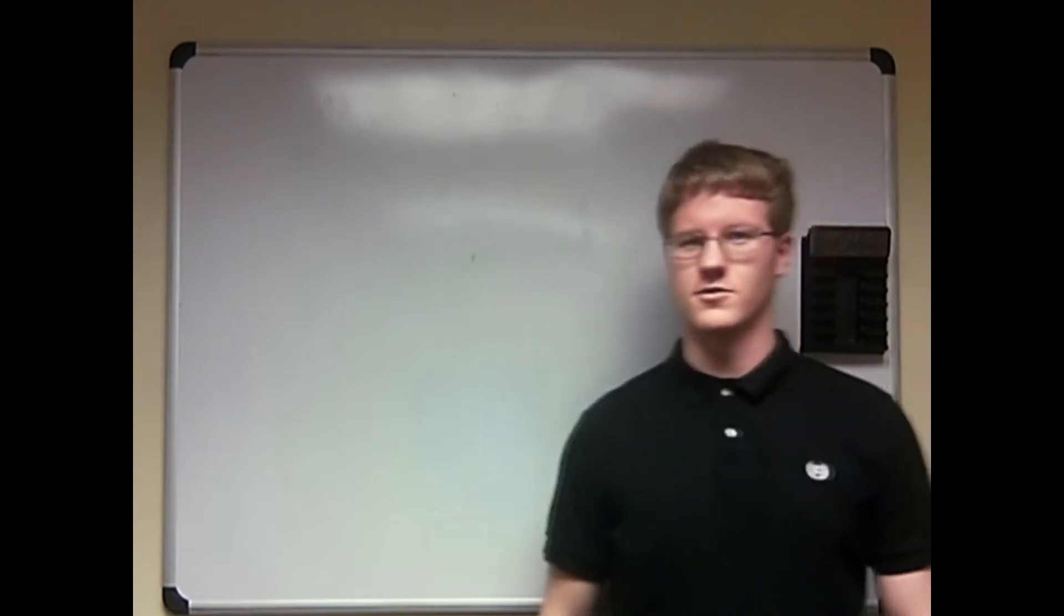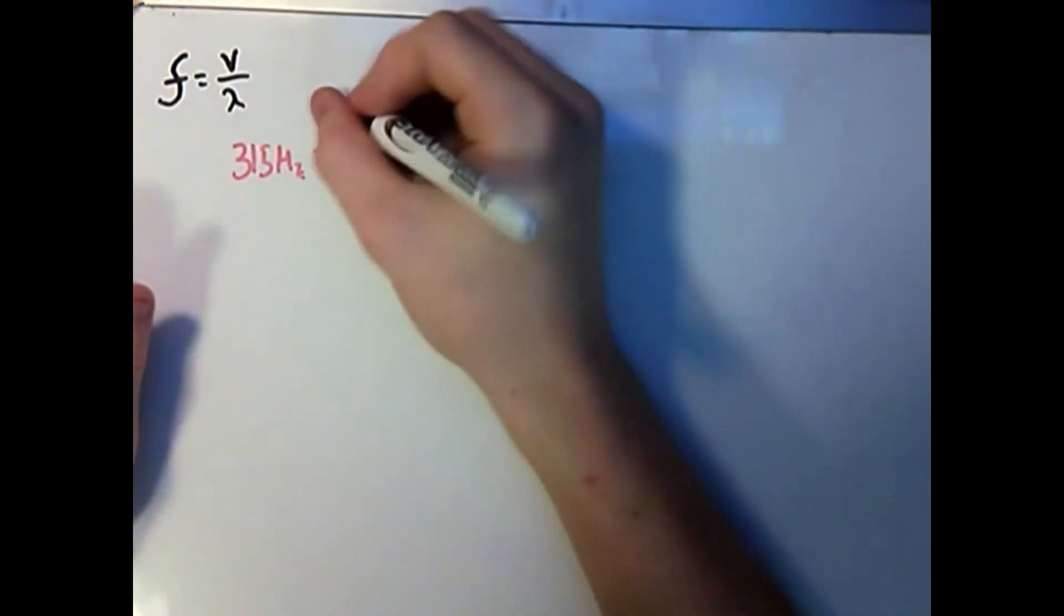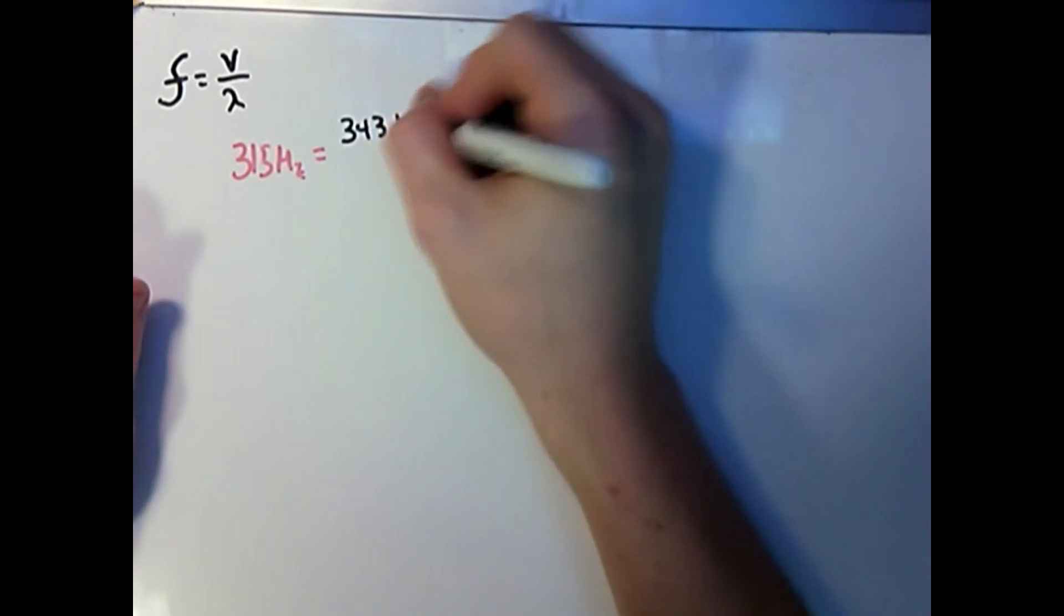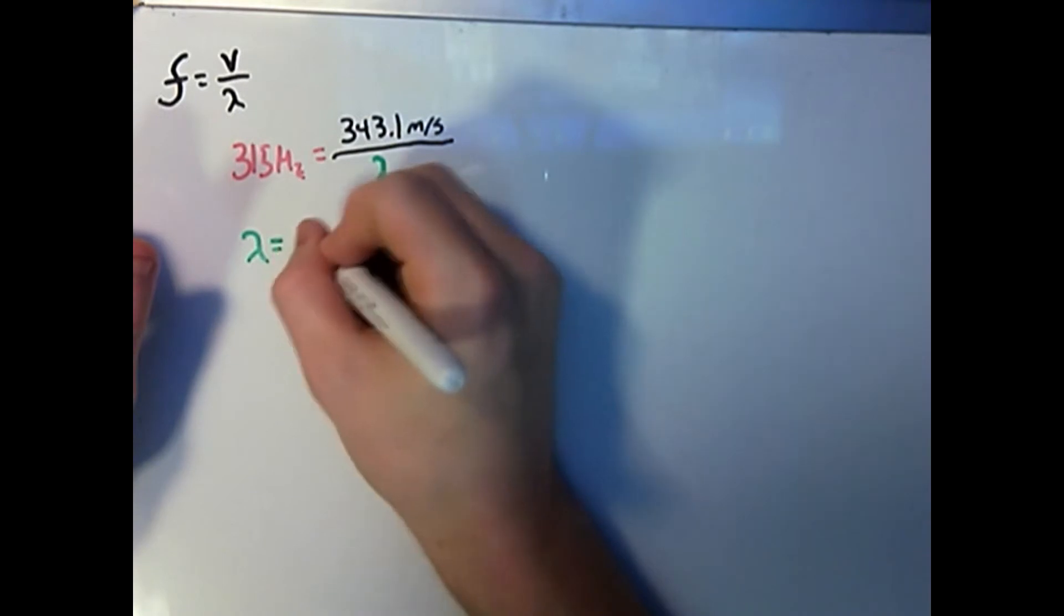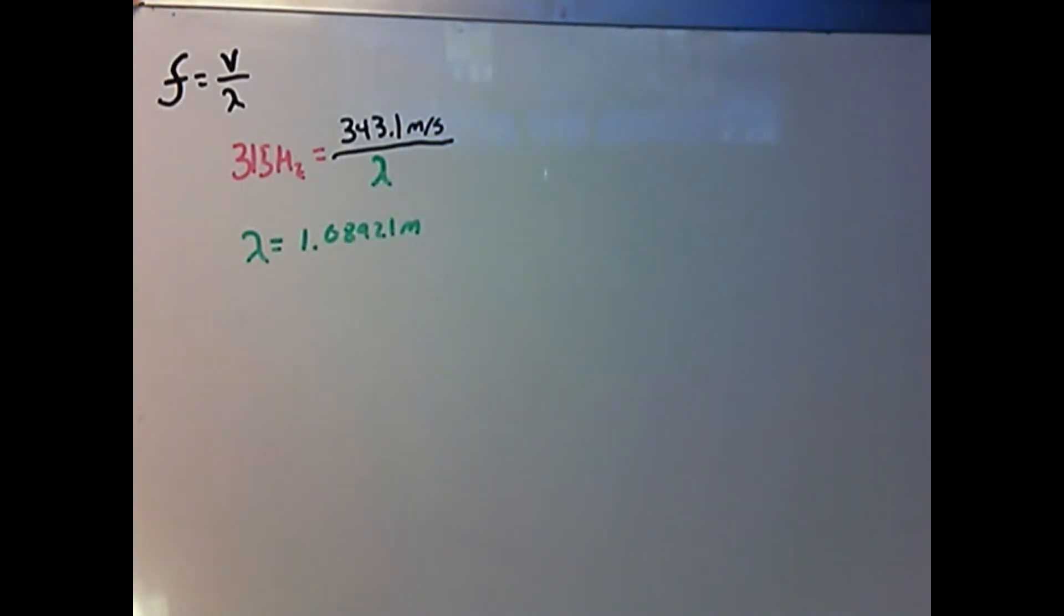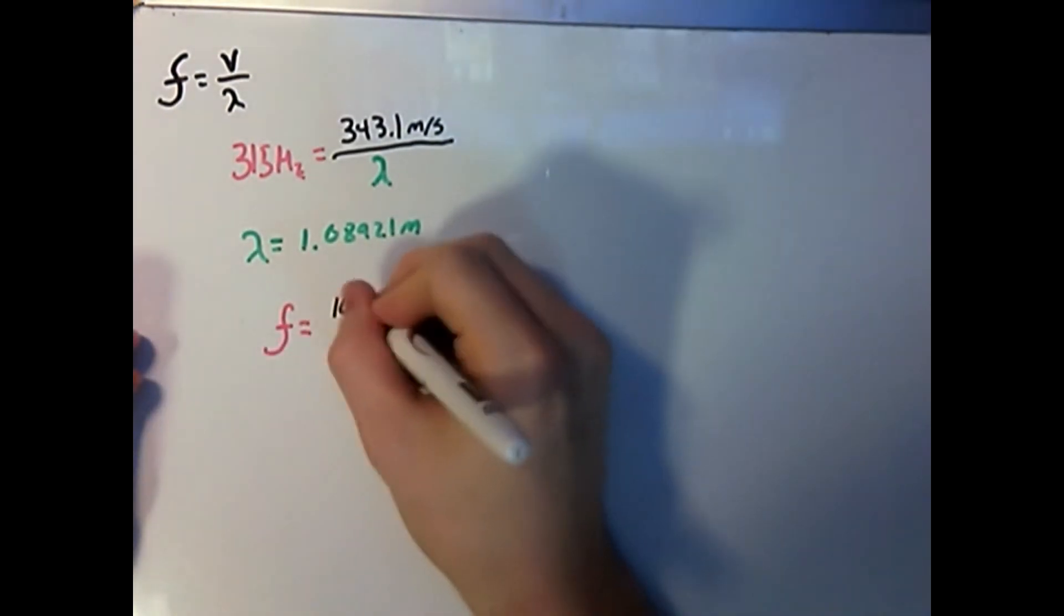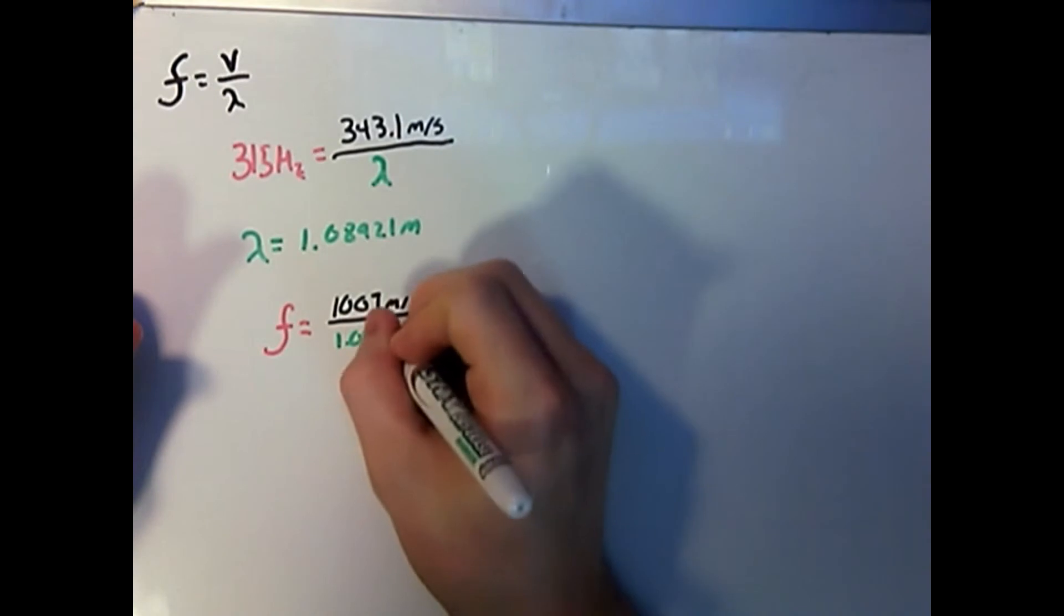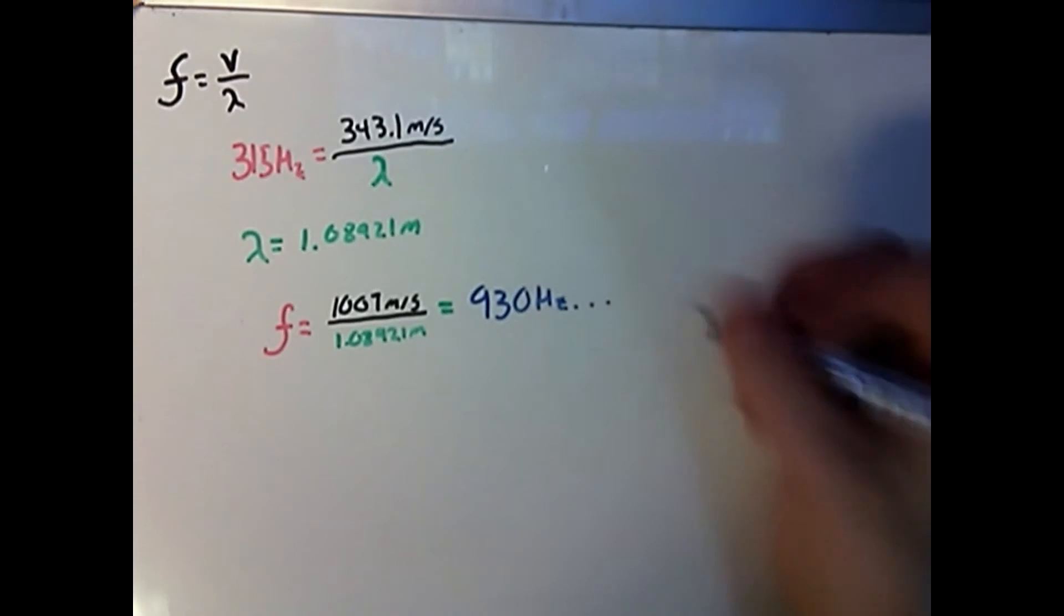Going back to our relation, frequency equals the speed of sound divided by lambda. We plug in our values, 315 hertz for frequency and 343.1 meters per second for the speed of sound through air. We can calculate our lambda, and we find lambda to be 1.08921 meters. Plugging this wavelength in to the equation and using the speed of sound for helium, we find our frequency should be around 930 hertz. This gives us a relative error of around 16%.